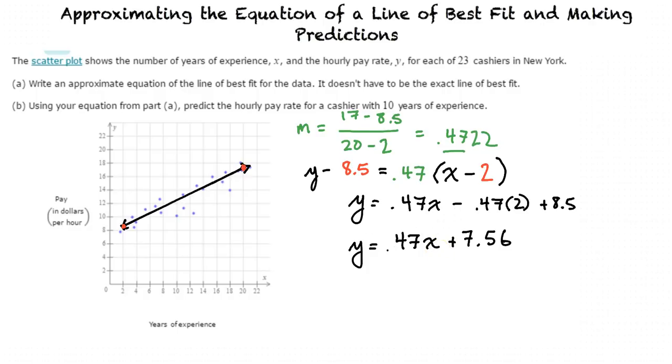Now are we going to plug in some number into this equation and solve for part B? Yes, we are. If x is the number of years of experience and y is the hourly pay rate, then we see that 10 will be the number we plug in for x here to solve for y, because it wants us to predict the hourly pay rate for a cashier with 10 years of experience.